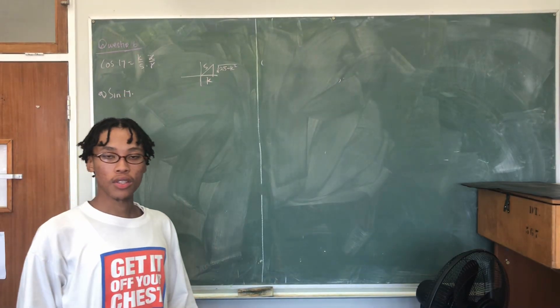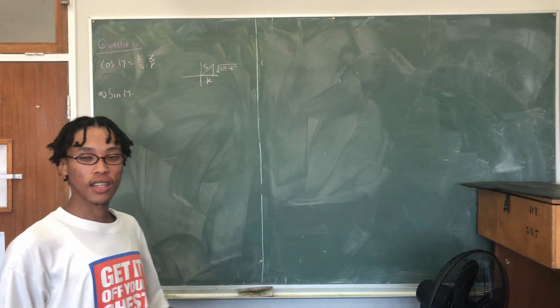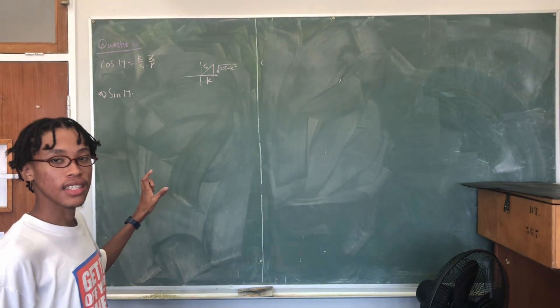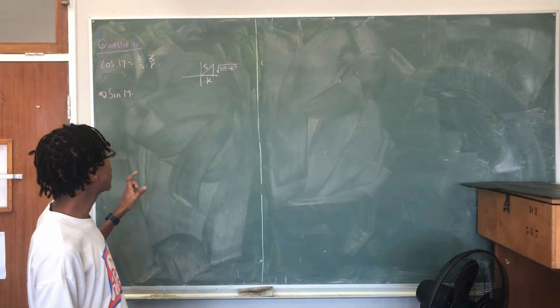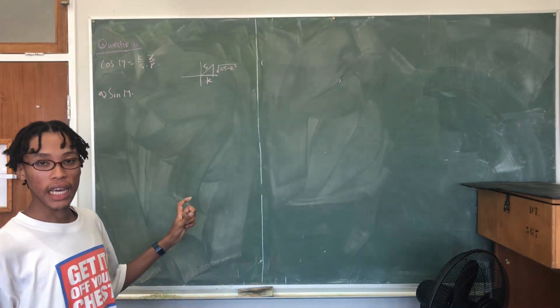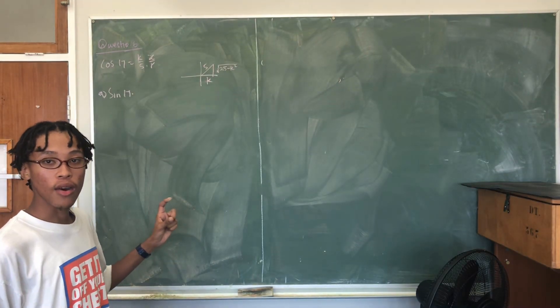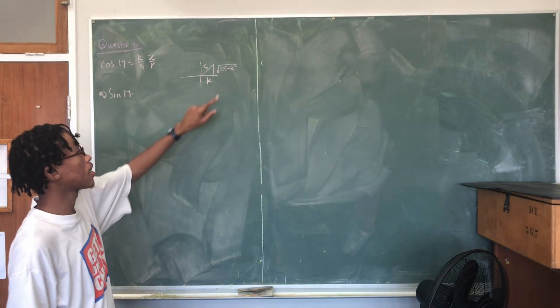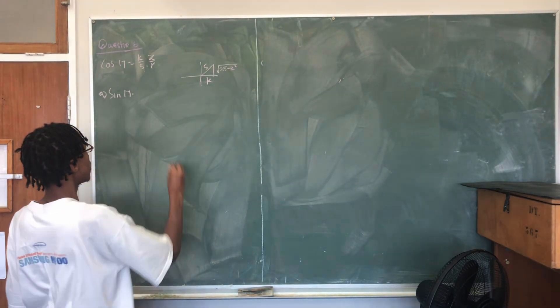The first part of the question is asking us to find sin 17. Sin of any angle is y over r, and we've already calculated our y, so sin 17 equals the square root of 25 minus k squared over 5.